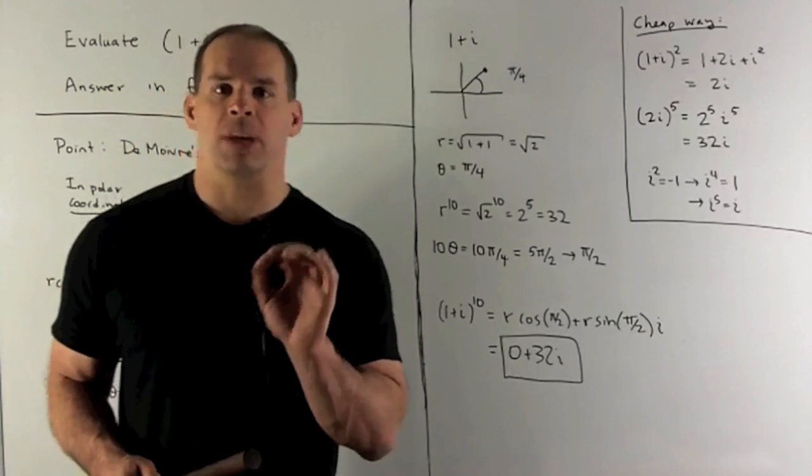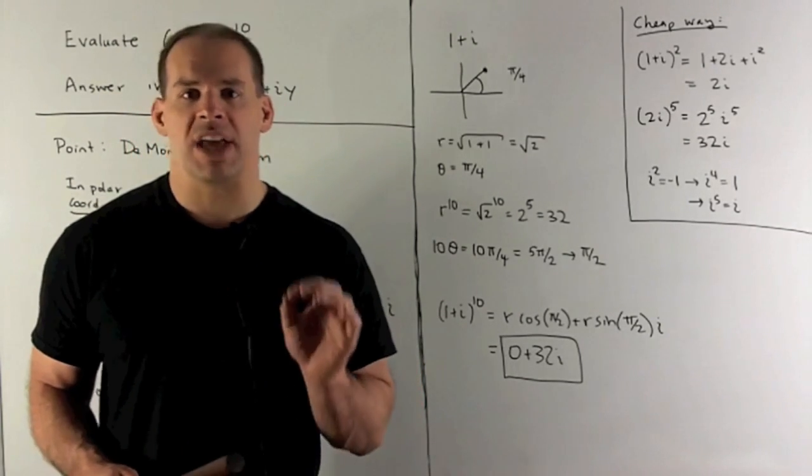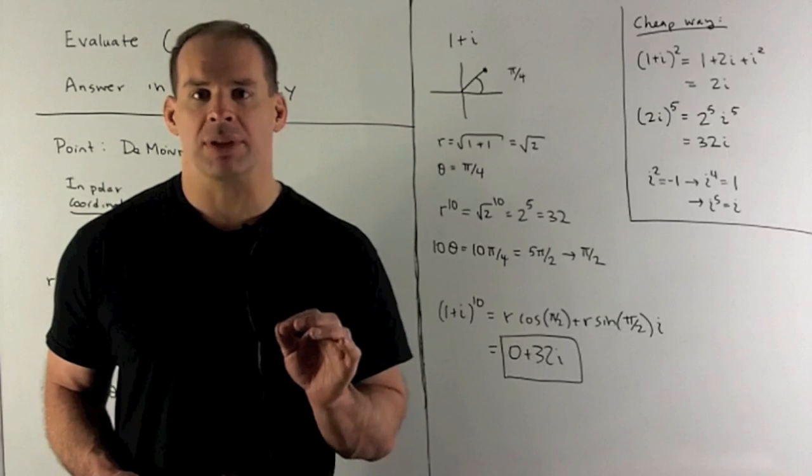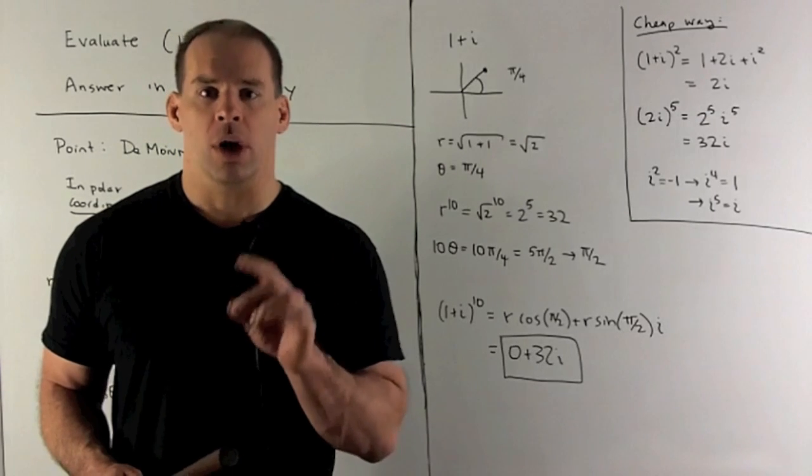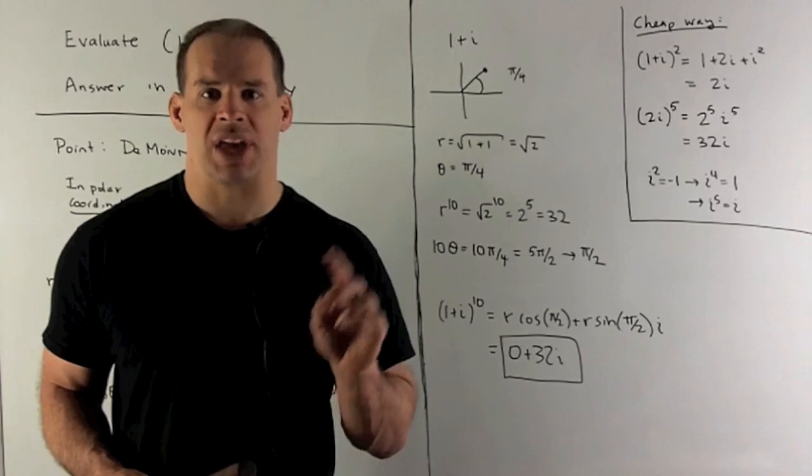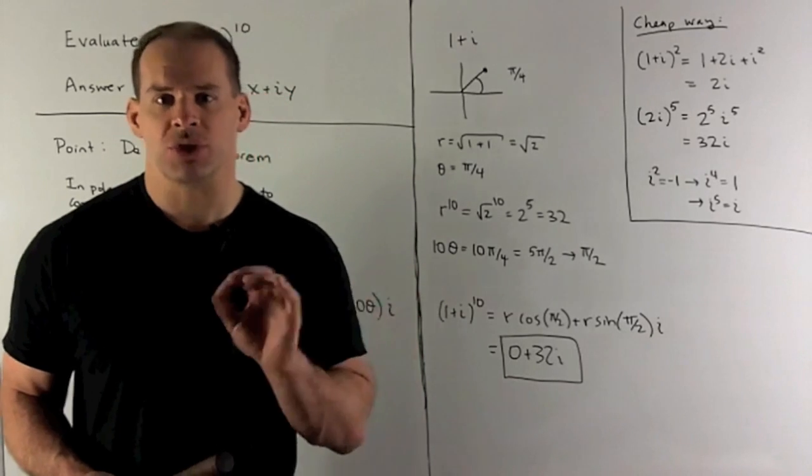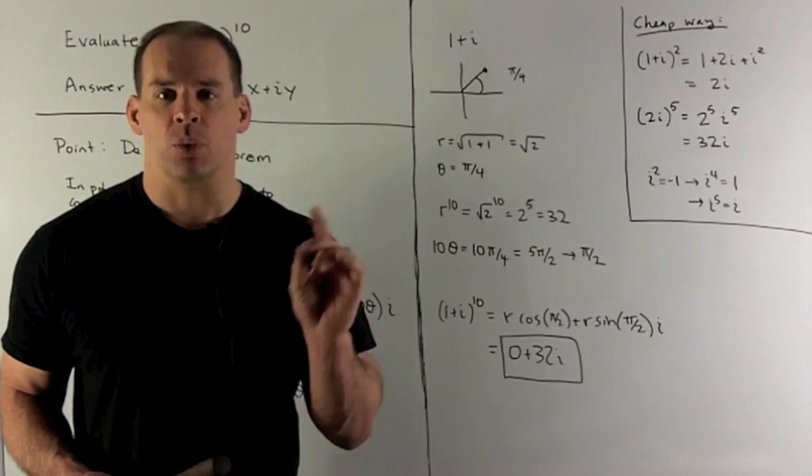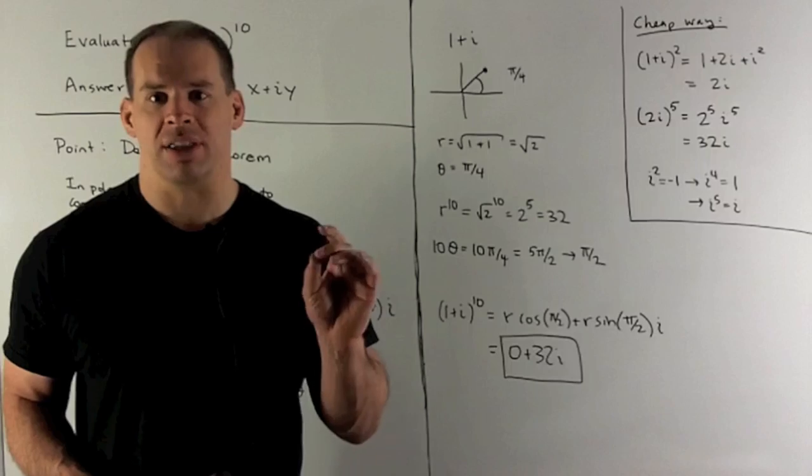Now, there's a cheap way to check our work here. If I take 1 plus i, square it, what happens? We're going to have 1 squared plus 2i plus i squared. i squared is minus 1, so we're just going to be left with 2i.